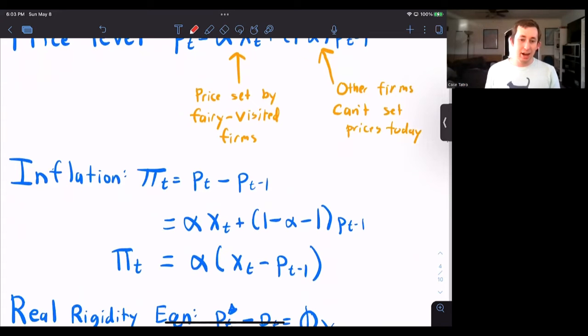Inflation we know is just PT minus PT minus one. We're dealing with logs here. So that's just alpha XT plus one minus alpha minus one. So inflation is just alpha times the price set by firms today minus last period's price level.